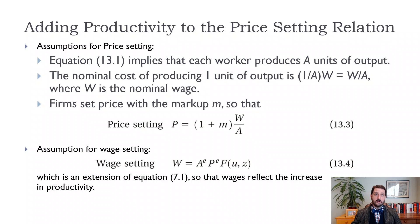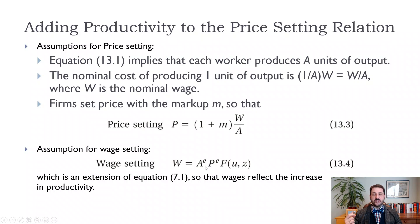Firms want to account for productivity when setting prices. The price-setting equation becomes P equals (1 + M) times W divided by A, where M is the markup. For wage setting, we also need to think about how much goods will sell for — our PE, the expected price level — and how productive workers will be, our expected productivity AE. So the wage equals expected productivity times expected price level times our function of the unemployment rate and the catch-all variable z.